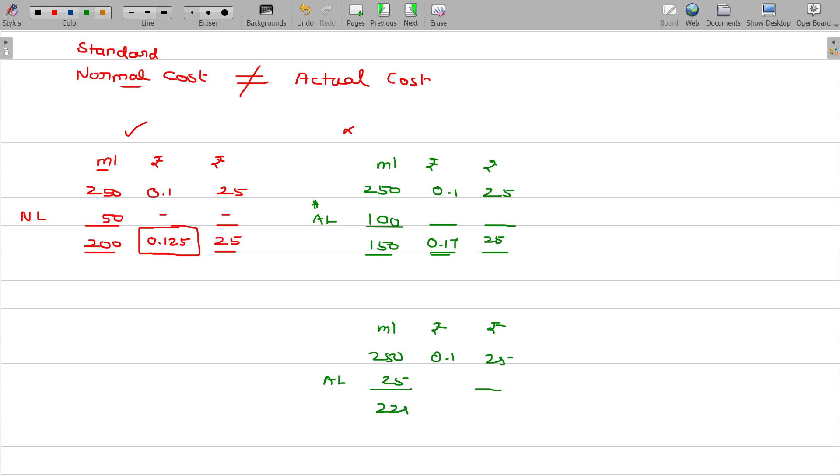You can charge only 0.125 from the customer by adding the profit. Actually, we recover the normal cost, not the actual cost. The difference between these two costs, 0.125 and 0.17. And the extra cost should be borne by whom? By the owner himself. In that situation, the gain is the same. That's the logic behind it.